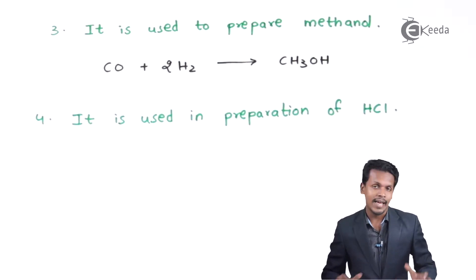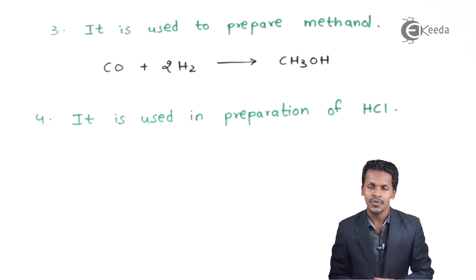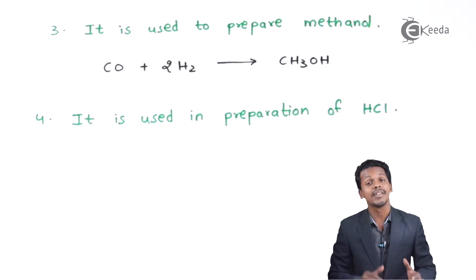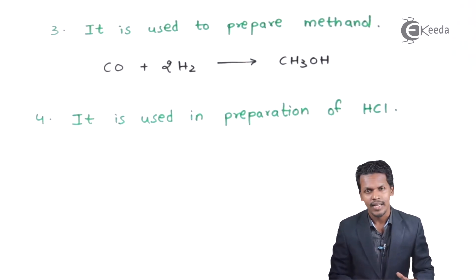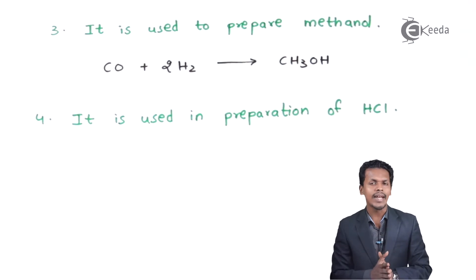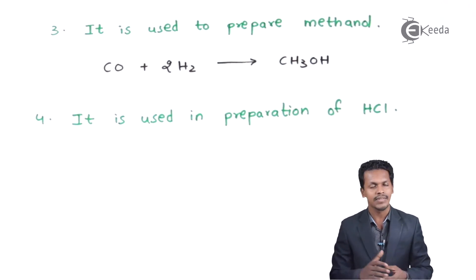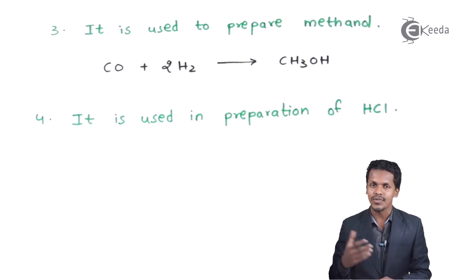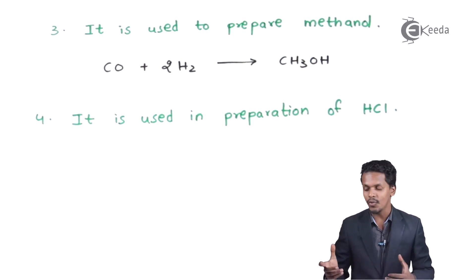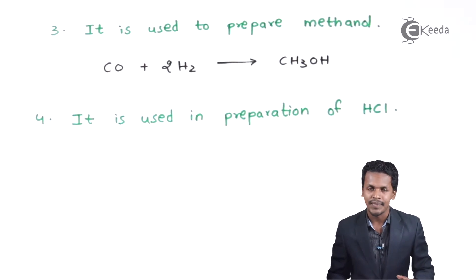Hydrogen is also useful in preparing acids. As we discussed, hydrogen can react with halogen molecules like Cl₂, so hydrogen reacts with Cl₂ molecules to form HCl. This is how an acid can also be prepared with the help of hydrogen.